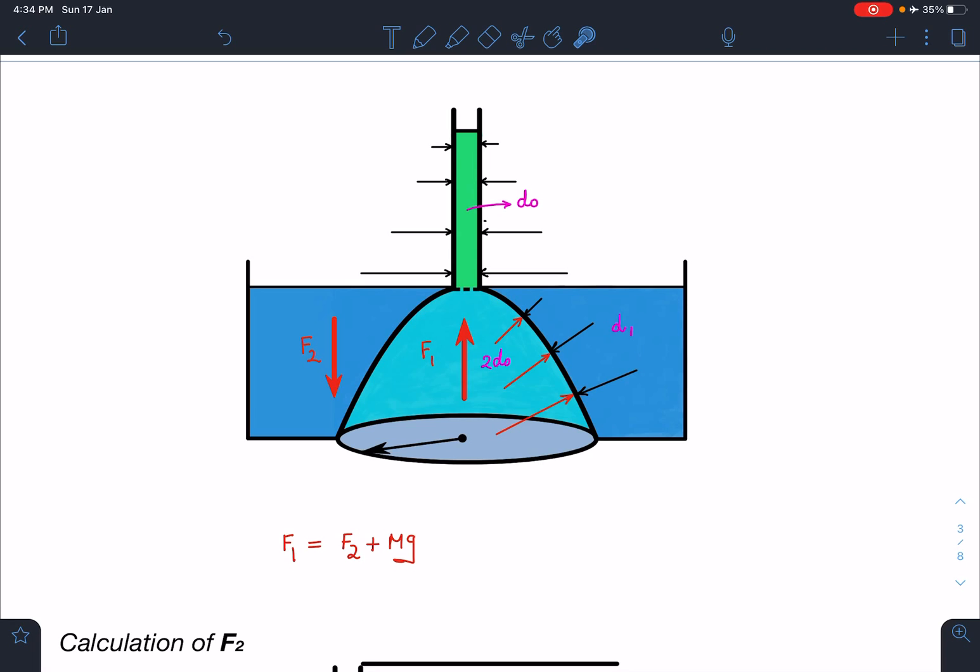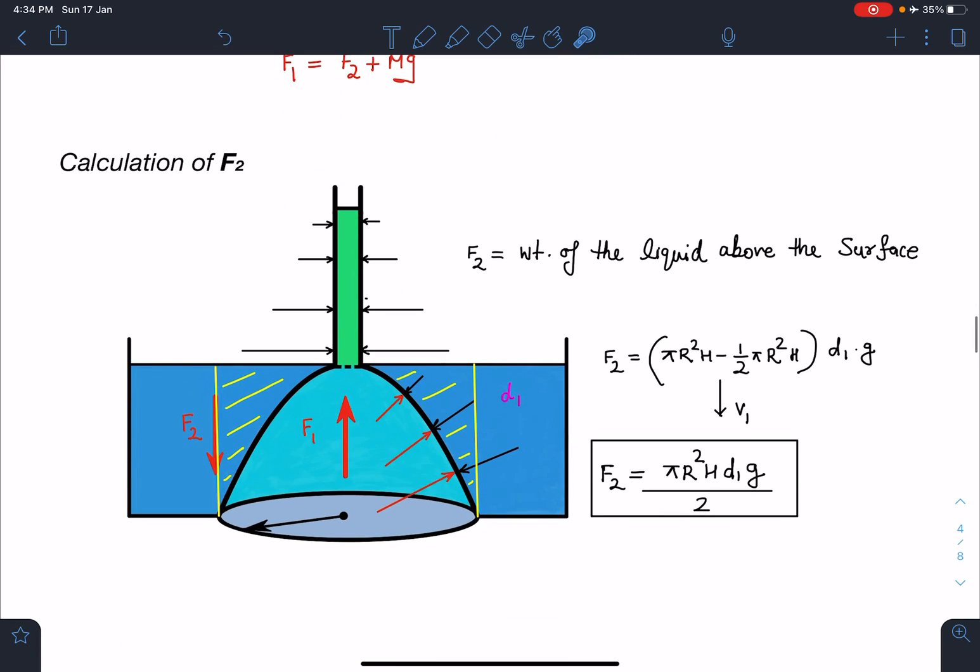Let's calculate one by one these forces. Calculation of F2: F2 is the force acting due to dark blue liquid on the paraboloid surface here. This is nothing but weight of the liquid above the surface, because this much weight of the liquid is balanced by it. This is very easy. From this bigger cylinder, if I subtract volume of this cone, I am going to get the answer. This R naught is given very very small compared to this, so I can take this volume approximately equal to half pi R squared H itself, under the assumption this R naught is very very small. Otherwise we have to do bigger paraboloid minus smaller paraboloid.